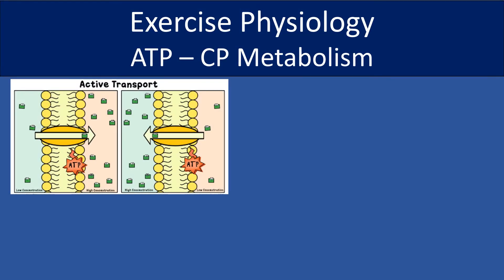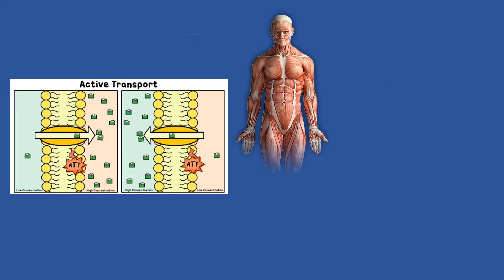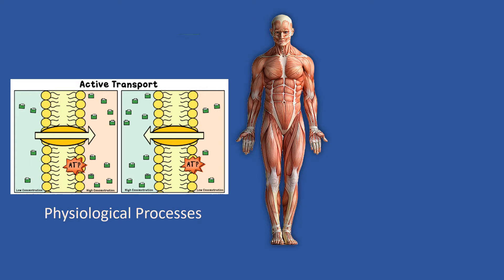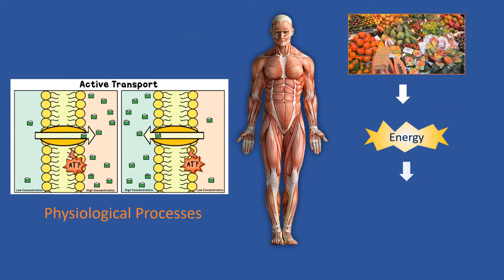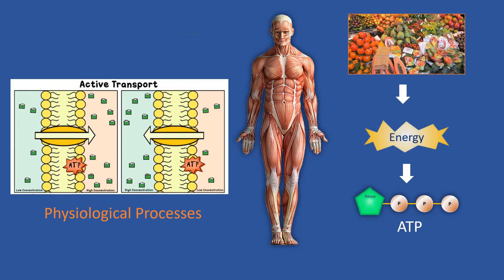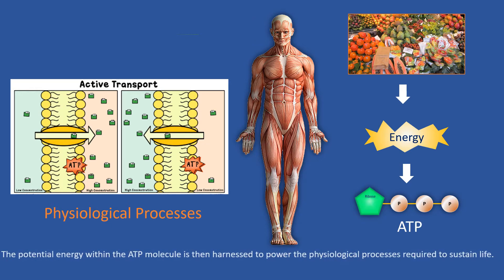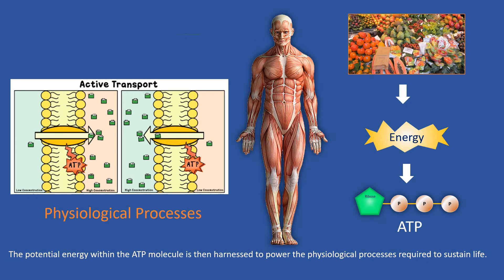Exercise Physiology: the ATP-CP Energy Metabolism. The human body needs a continuous supply of energy to power the countless life-sustaining physiological processes that occur constantly. The energy that food contains is not transferred directly to power these physiological processes; rather, it is used to form an energy-rich compound termed adenosine triphosphate, or ATP. The potential energy within the ATP molecule is then harnessed to power the physiological processes required to sustain life.